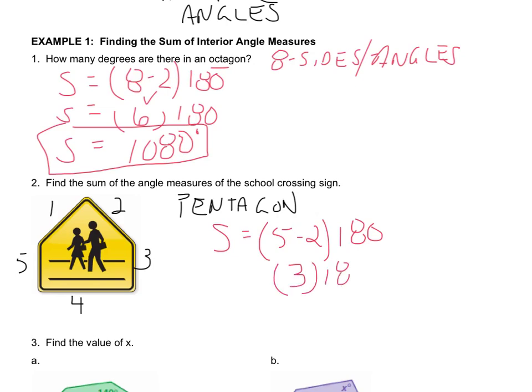And again, times one eighty. So the pentagon, no matter what it looks like, no matter what type of a pentagon it is, is going to always have five hundred and forty degrees.